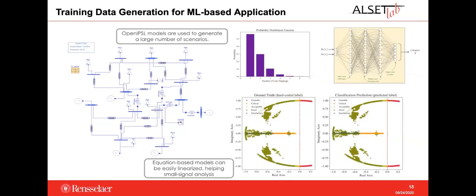In this other application, models from OpenAPSL were used to generate a large number of scenarios used as a training set for a machine learning application to classify eigenvalues. The eigenvalues were obtained by performing linearization of the model using Modelica, so the entire process — generation of scenarios and obtaining eigenvalues — was done using Modelica.